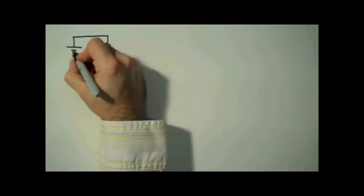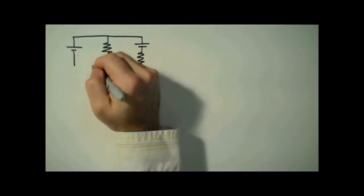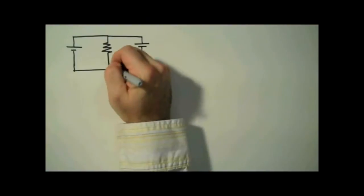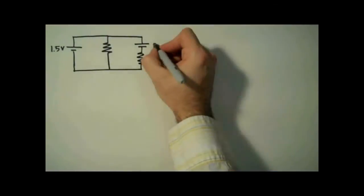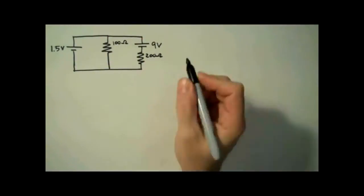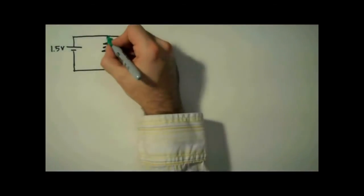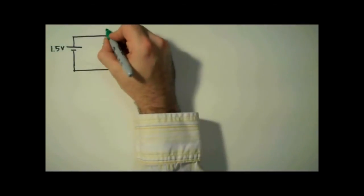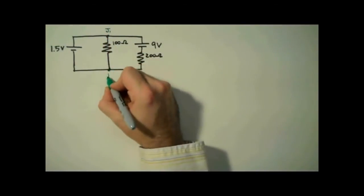We'll use Kirchhoff's rules to analyze a circuit. Specifically, we're going to determine the current through, the voltage across, and the power dissipated by the two resistors that you see here. As always, when using Kirchhoff's rules, we're going to start by labeling our junctions.